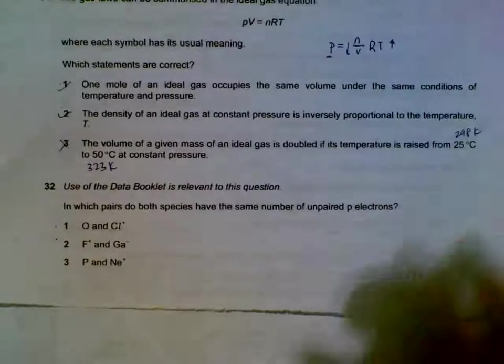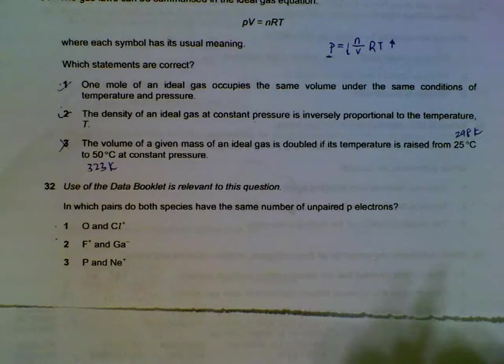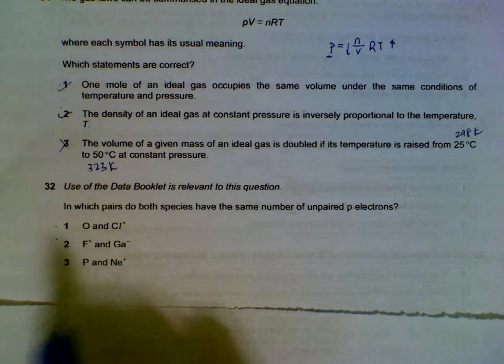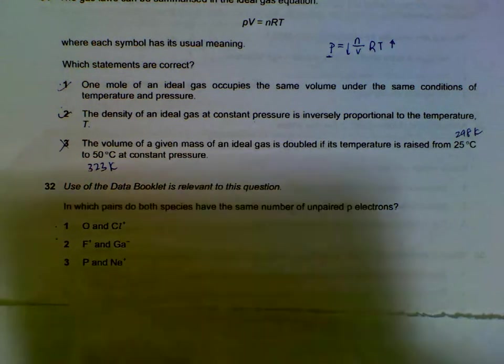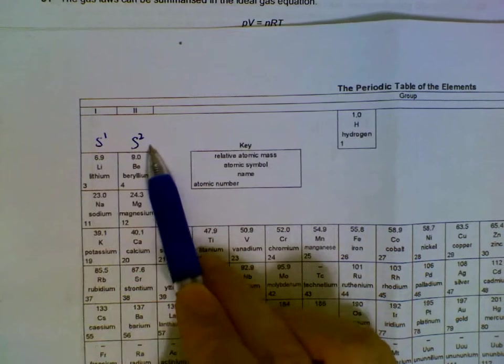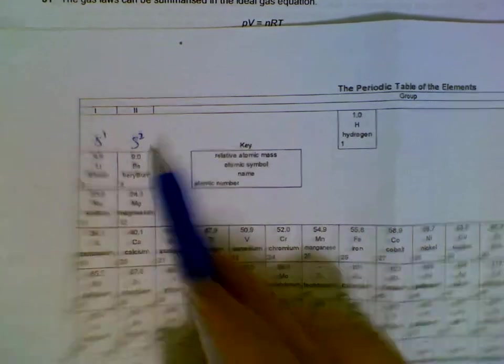In which pairs do both species have the same number of unpaired P electrons? You can actually calculate the number of electrons, or there is a shortcut which I can show you using the periodic table. What you can do is you can put S1, S2 on top of group 1 and group 2.